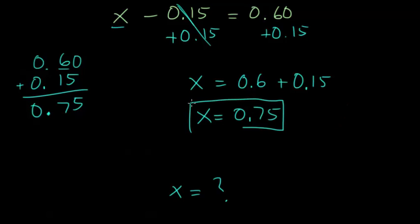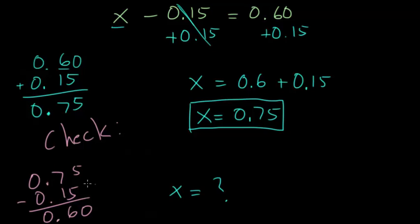And again, we're going to always check our work here. So let's change colors. We'll check. And we need to know when I plug in 0.75 and take away 0.15, do I get back 0.6? And again, we're going to line up the decimals. And now we're subtracting. 5 minus 5 is 0. 7 minus 1 is 6. And so you do get 0.6, which means that our answer of 0.75, we can feel very confident, is the correct answer.